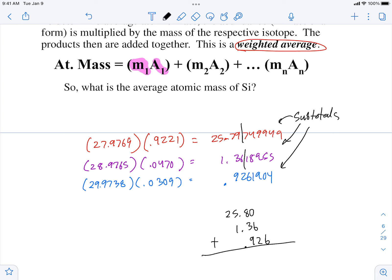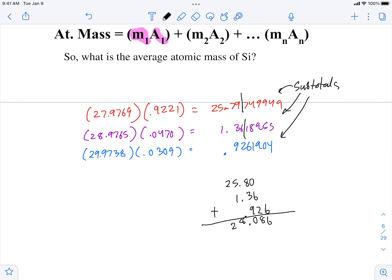Those are the numbers that I will add. And the calculator is going to tell me 28.086. But you should know your rules for adding. You cannot keep the thousandth place because not all of these numbers have a thousandth place in common.